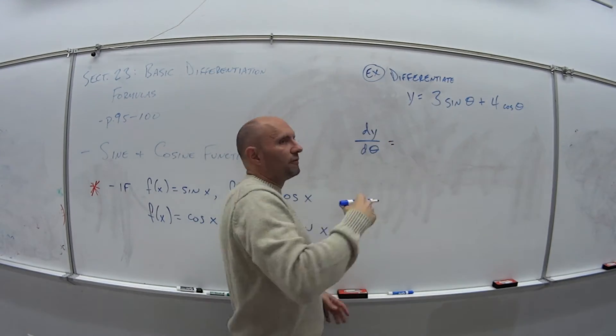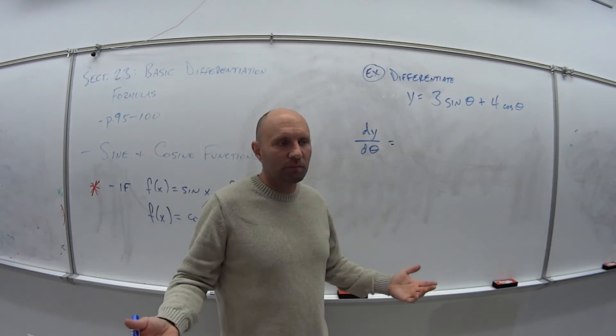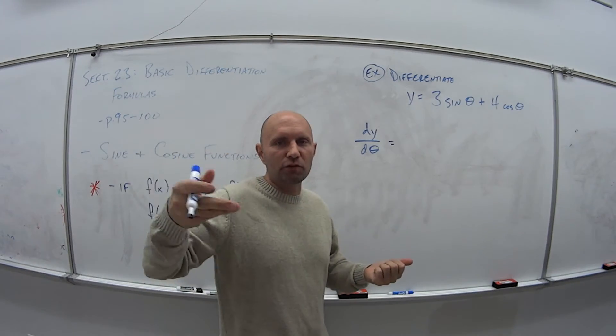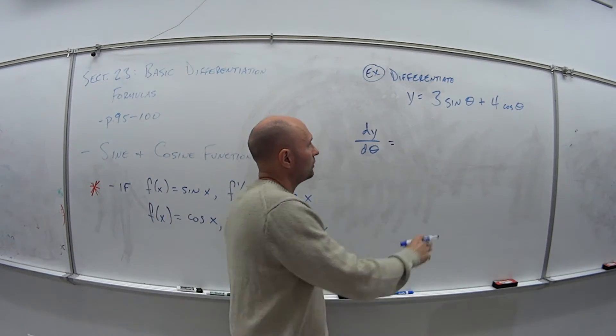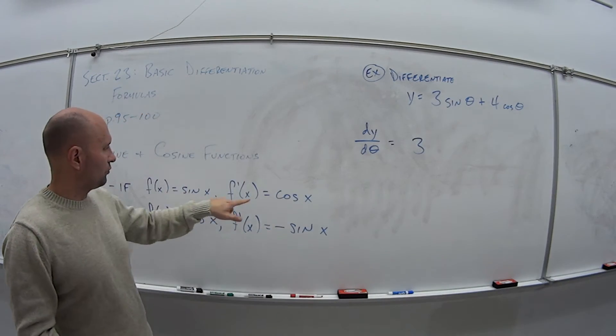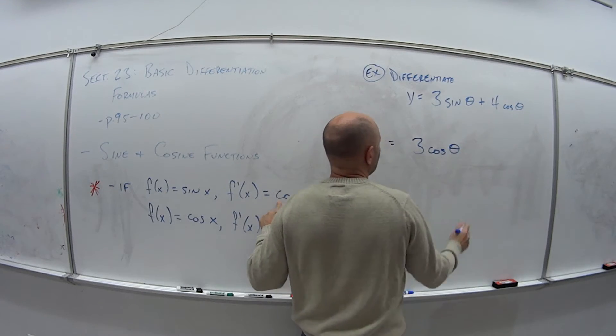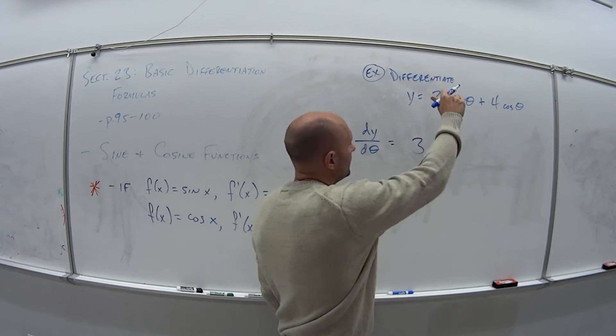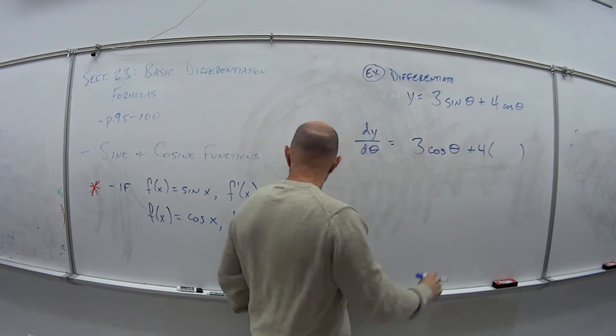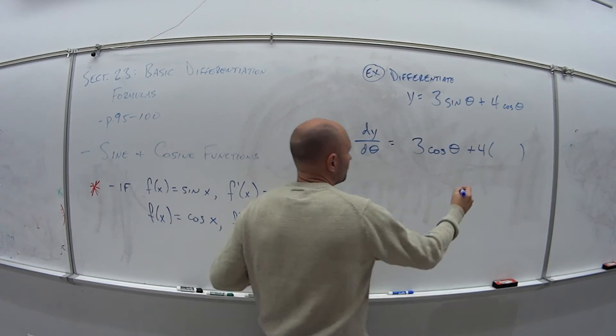Well, when we have 3 sine of theta, it's like taking the derivative of 3x. So we have the number in front, the constant, and then whatever the derivative of the piece is afterwards. So we have 3 and our derivative of sine is cosine. So this would be cosine theta and then plus 4 times the derivative of cosine. So the derivative of cosine is minus sine of theta.